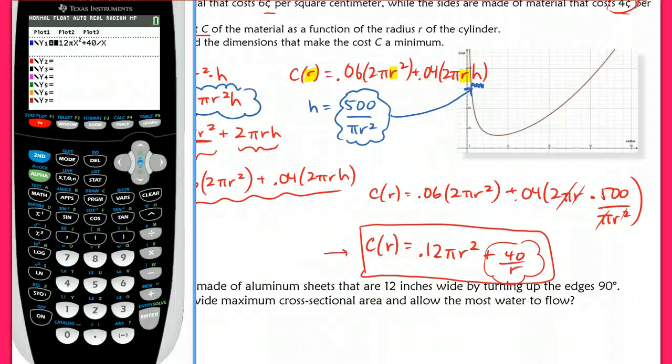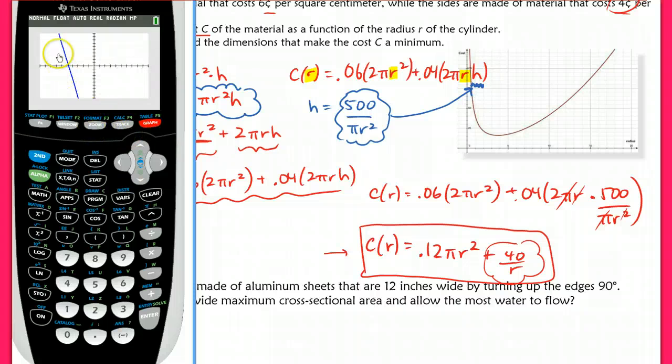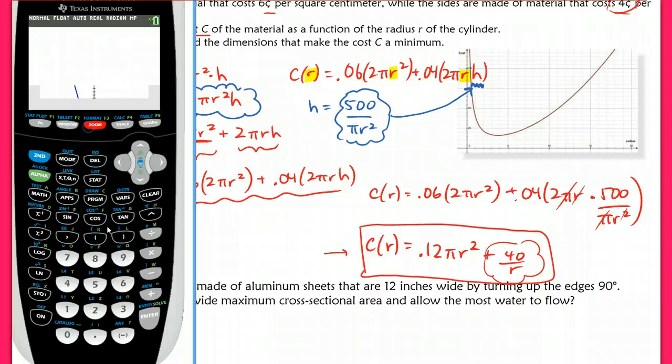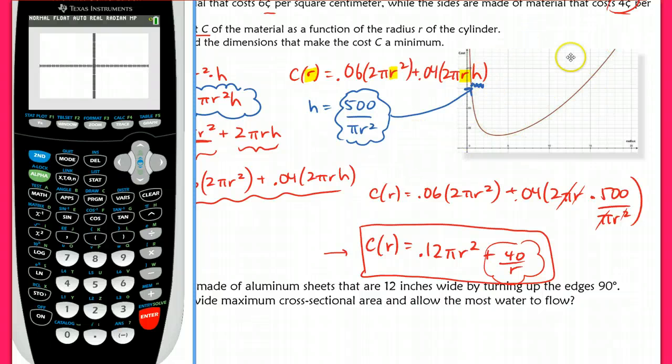Here I already have the function typed into my calculator, and I'm going to go ahead and hit graph on this. I have the window in our standard window. When I'm looking at this function, it looks like a linear function, and I know that this is definitely not linear. So what I want to do is zoom out. This is like a real-world model problem, so you really shouldn't have any inputs that are negative or any outputs that are negative because we're dealing with radius and cost. So I'm going to zoom out on this, and now I'm going to be able to see my function look a little bit more like this graph that I showed you here.